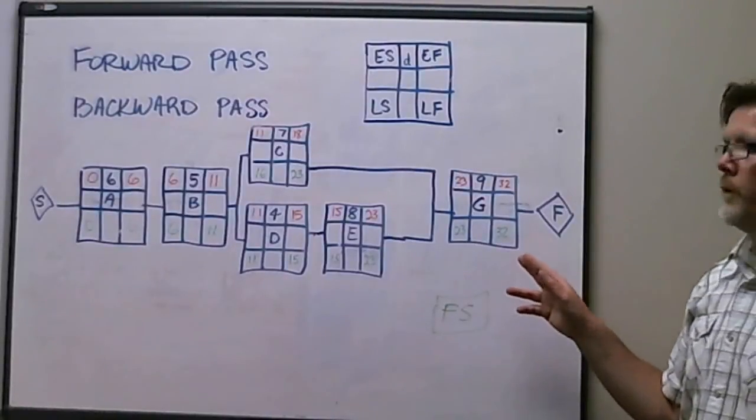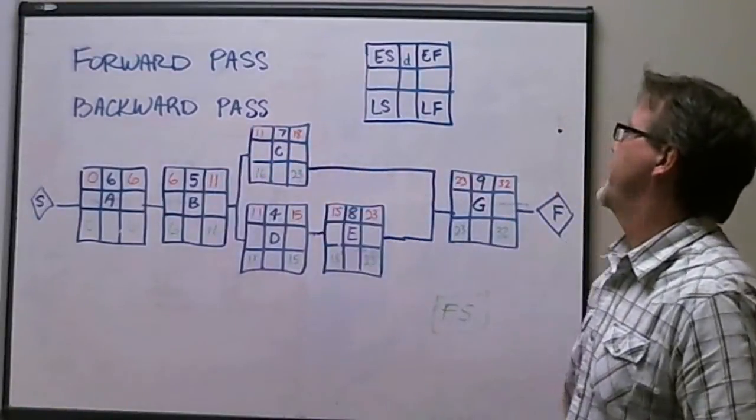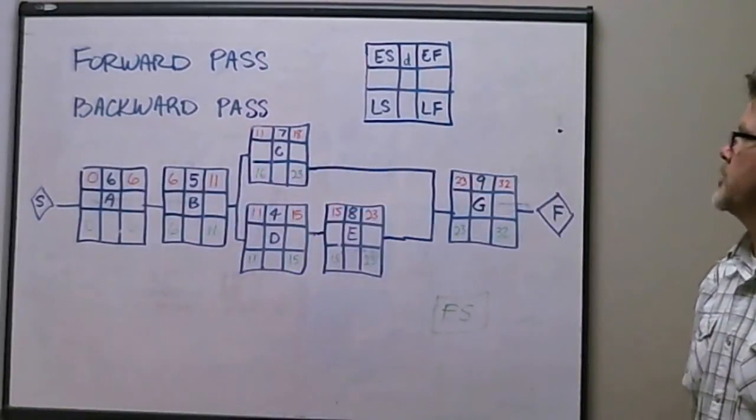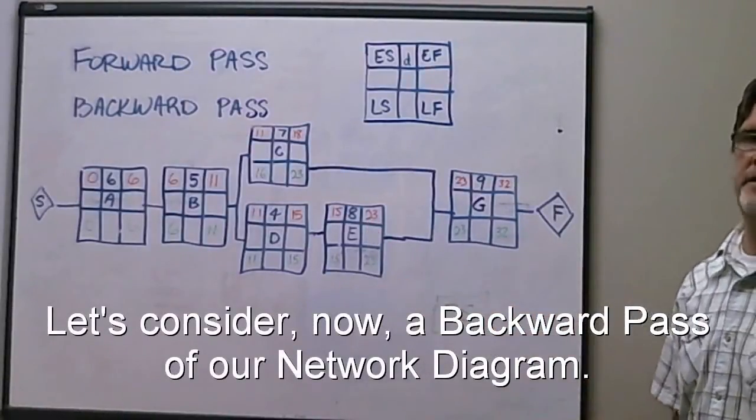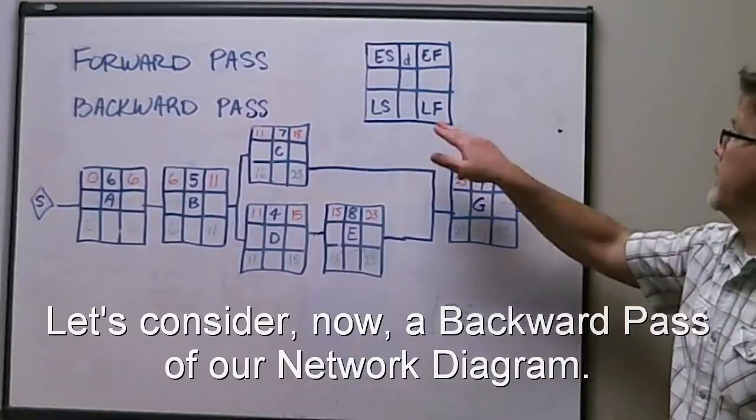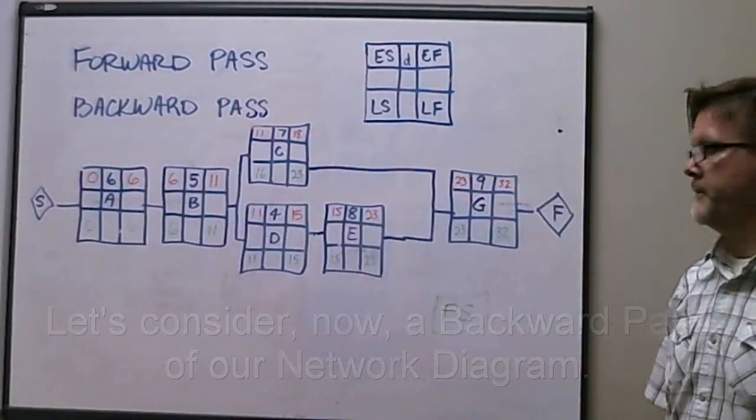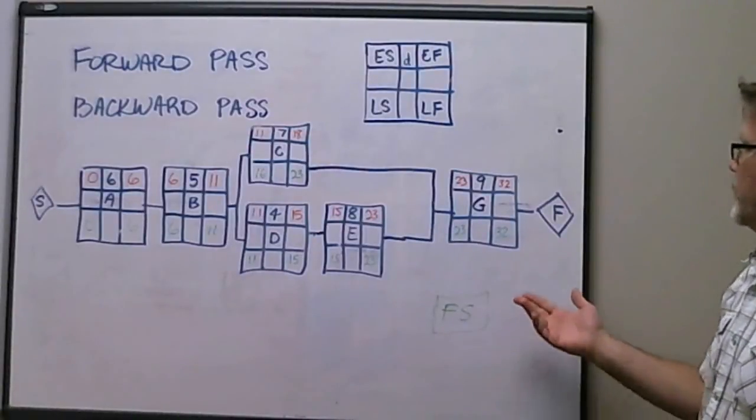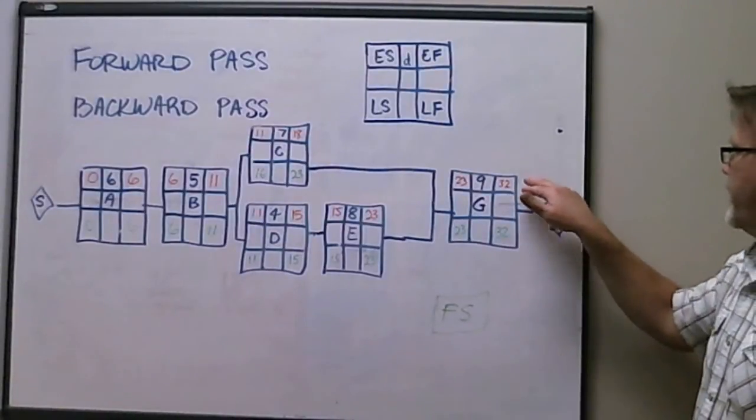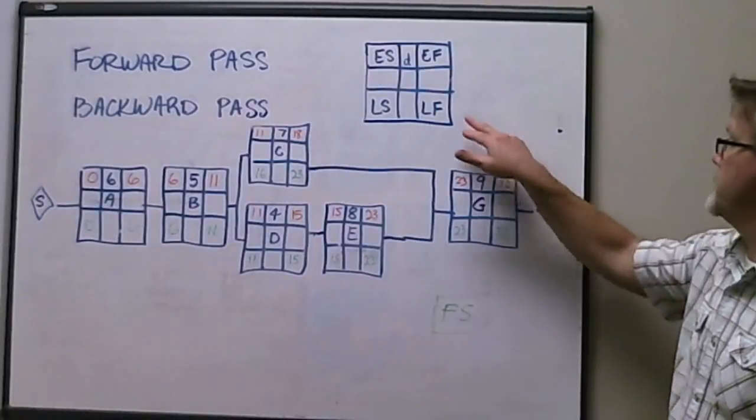Now, what we want to do is we want to do what we call a backward pass. And a backward pass is essentially now working our way back to identify late finishes and late starts to our project. Again, simple math, only we're doing some subtraction. What we do now is we take the duration of our project as we have determined. And now that becomes our late finish date.